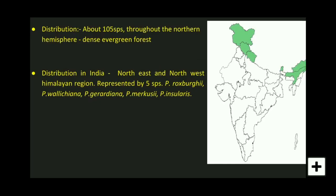Regarding distribution throughout the world, you can see the presence of more than 105 species. These are present towards the northern hemisphere and these species form dense evergreen forests. These plants are mainly present in the northern hemisphere because they grow better in colder weather and in acidic soils. In India, you can see the presence of five species.